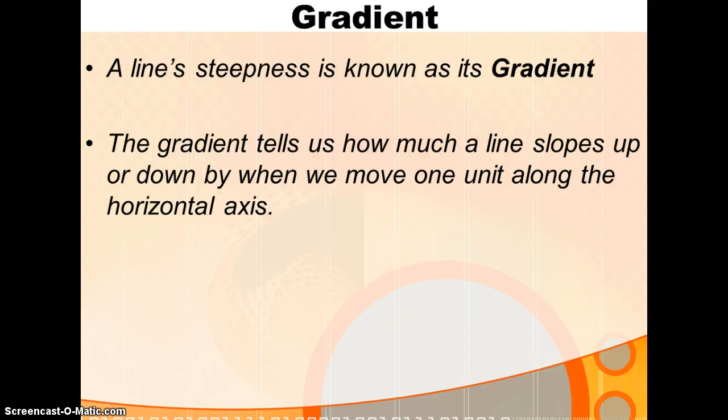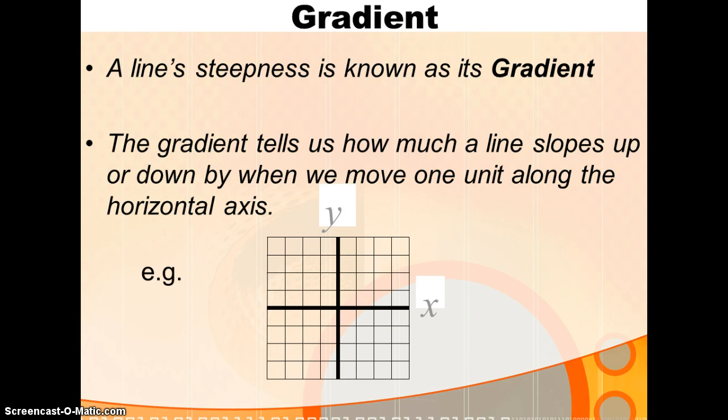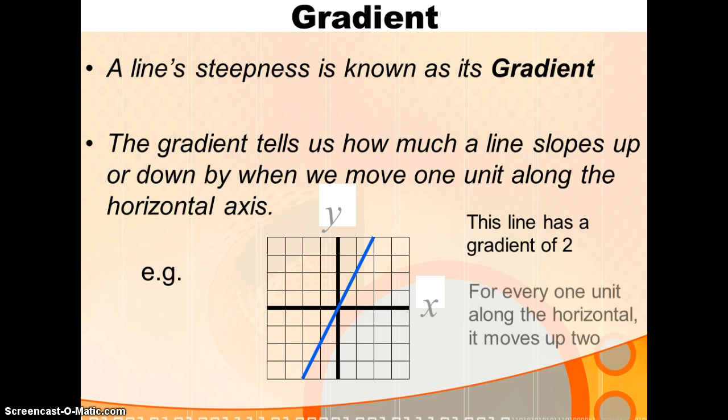So the gradient tells us how much a line slopes up or down as you move one unit along the horizontal axis. So if you look at this line, and as we consider how far up you go as you travel one box across or one unit across, you see that as we go one across, we go two up. One across, two up. So this is a line which has a gradient of two.